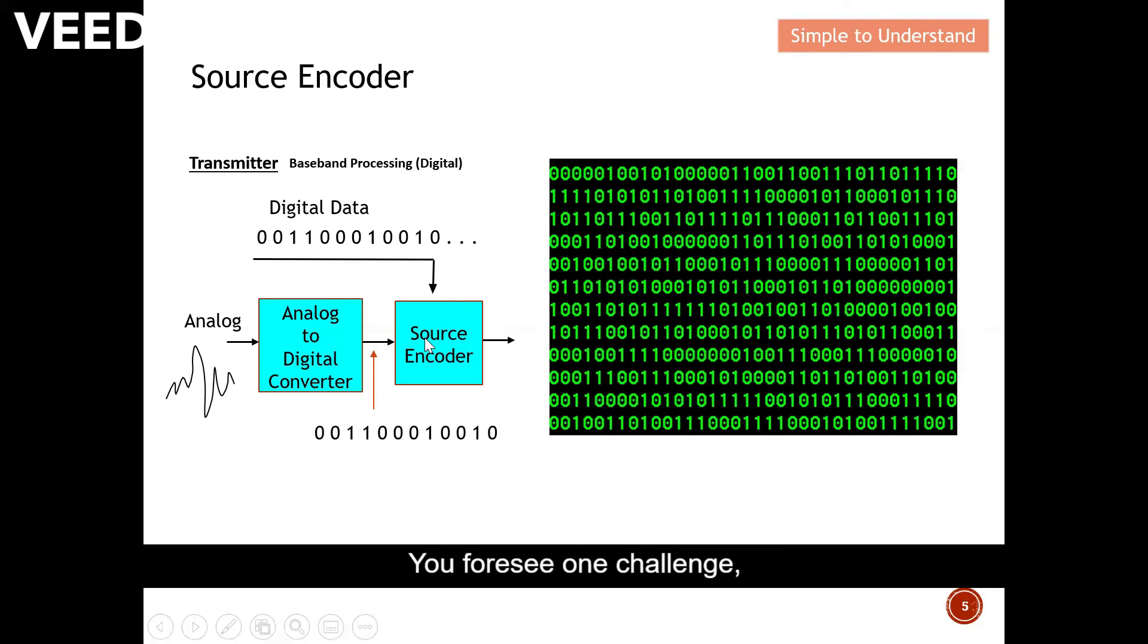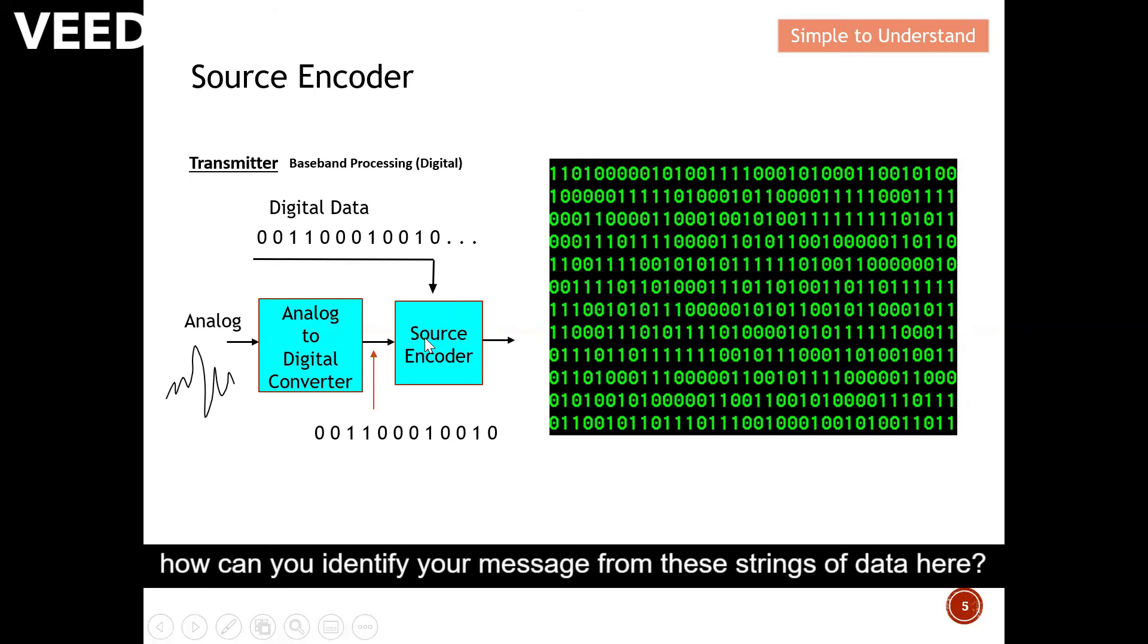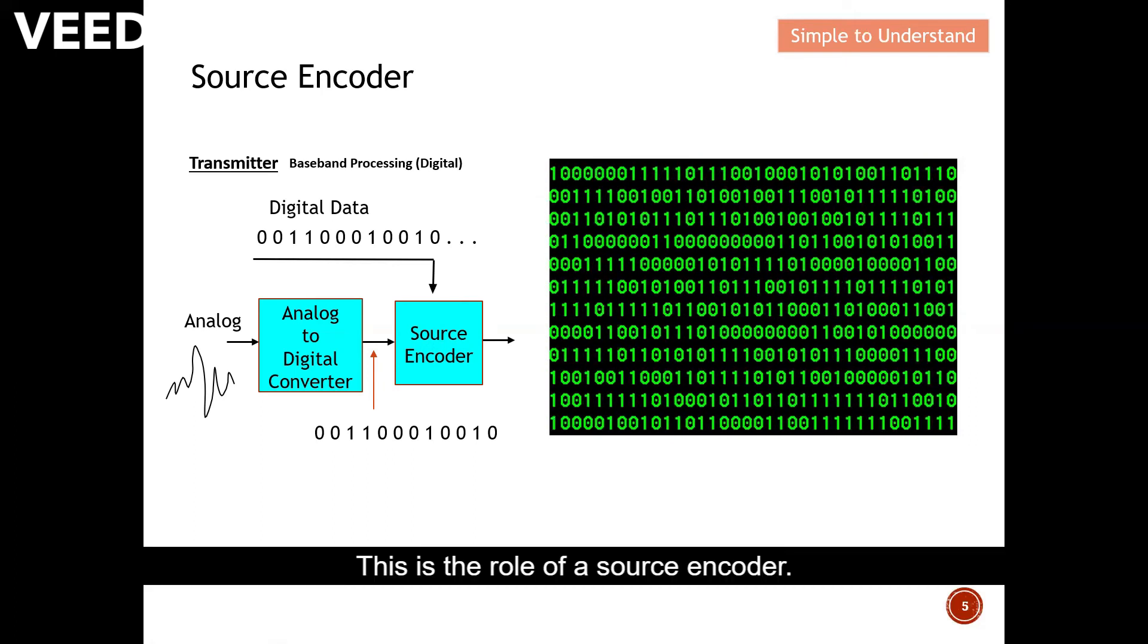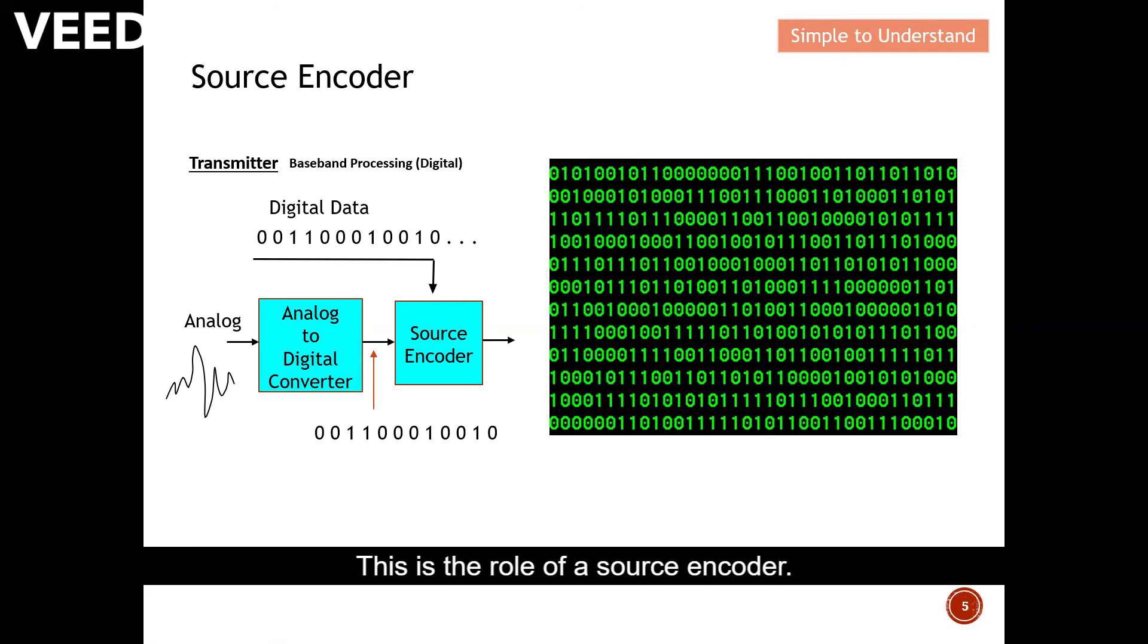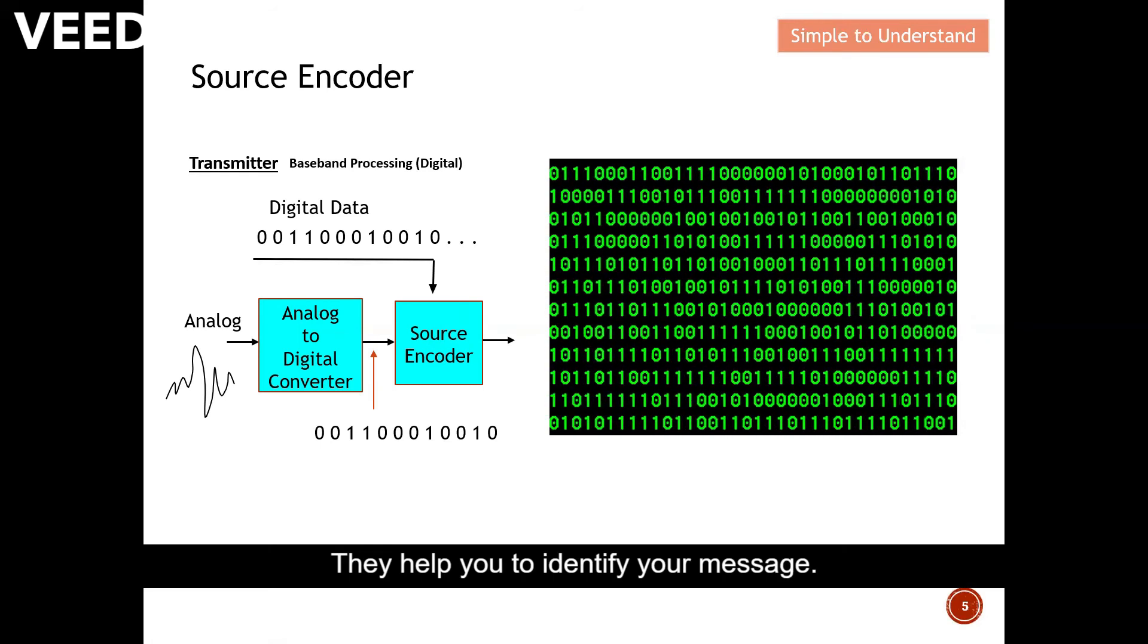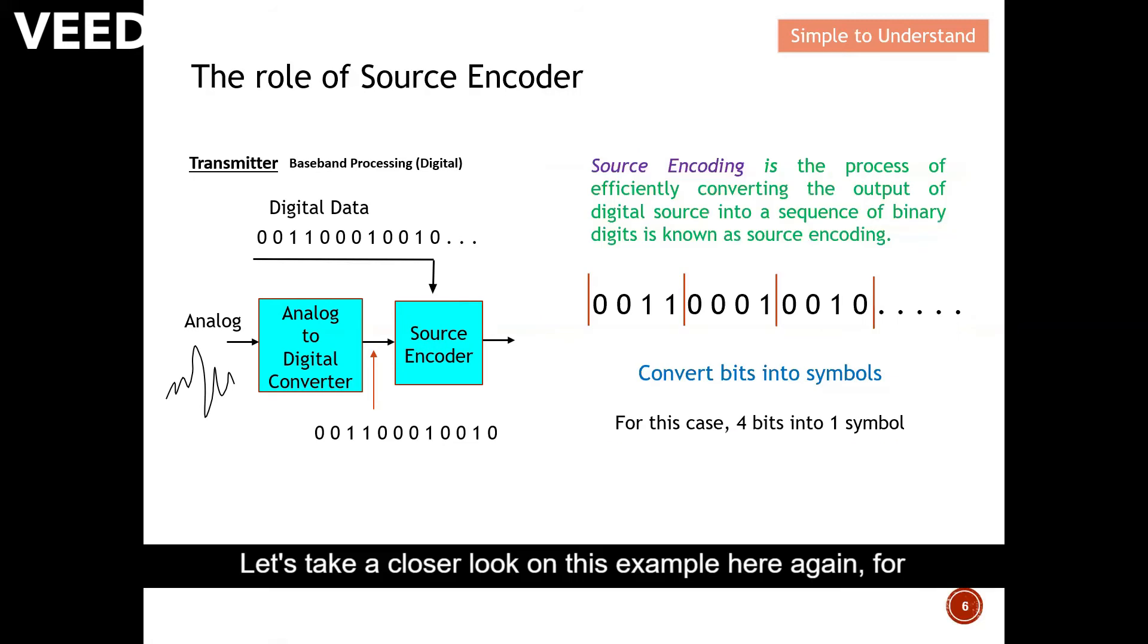Over here you probably can see that these are the messages that are fed into the source encoder. If you foresee one challenge, how can you identify your message from these strings of data here? So this is the role of a source encoder. They help you to identify your message.